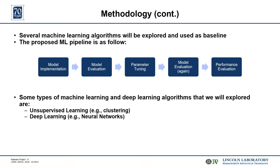For our machine learning pipeline, we're going to use Python for our model implementation. We're going to evaluate it against a baseline composed of common machine learning algorithms used in the industry or in previous papers. These results will help us do parameter tuning to enhance our algorithm's performance, and then re-evaluate against our previous results and that baseline. For performance evaluation, we have metrics such as recall and false positive rate. Algorithms we are considering include unsupervised learning such as clustering, and deep learning approaches like neural networks.